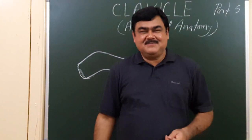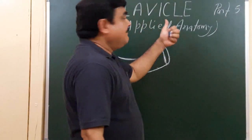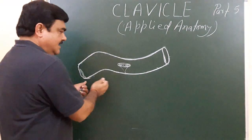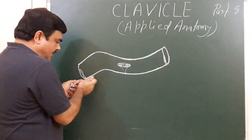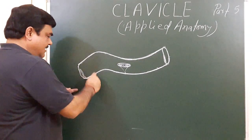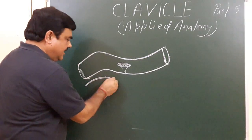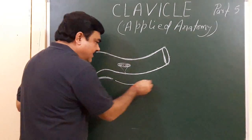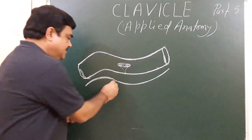Let us discuss the applied aspect of the clavicle. Here you can see this is the medial two-third part of the clavicle, and this is the lateral one-third part of the clavicle. There are two curvatures here — this part is concave anteriorly. One curvature is here and the other curvature is here.